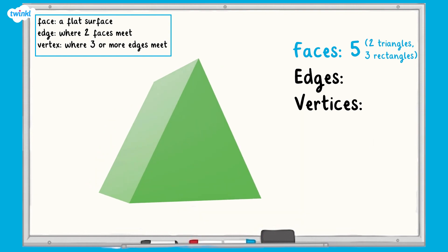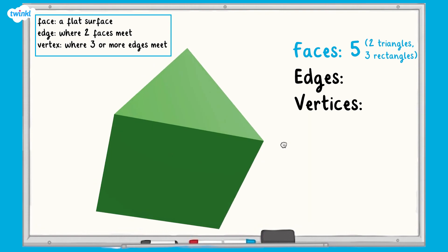Next, let's count the edges. We need to remember to count the edges on the opposite ends and between the rectangular faces. One, two, three, four, five, six, seven, eight, nine. There are nine edges.